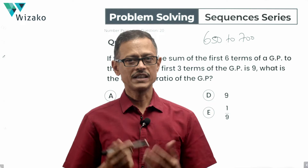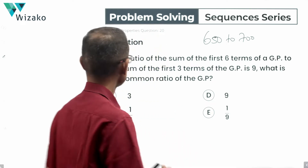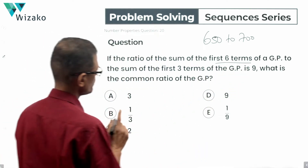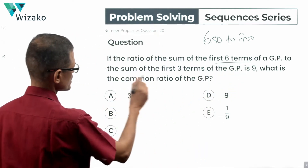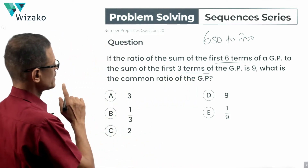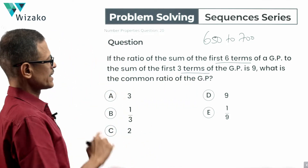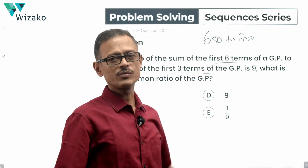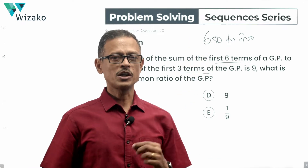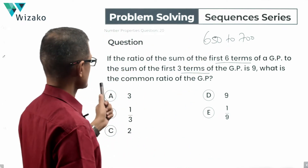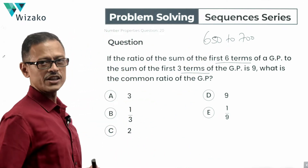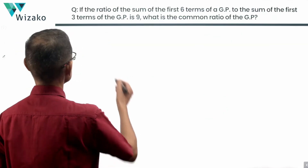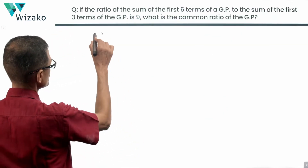The question states: if the ratio of the sum of the first six terms of a GP to the sum of the first three terms of a GP is nine, what is the common ratio of this geometric progression?